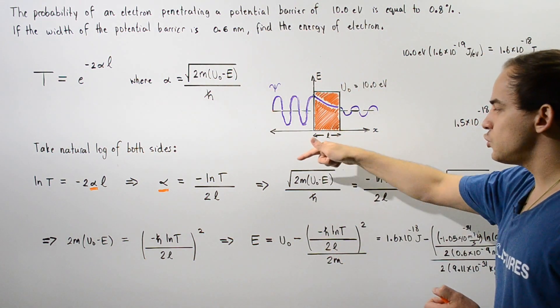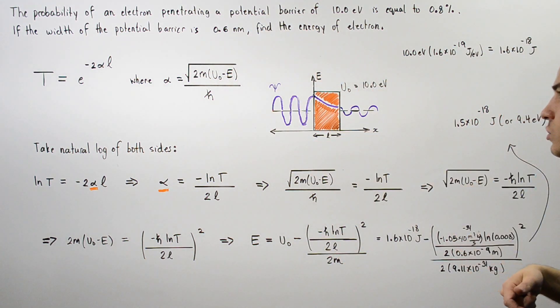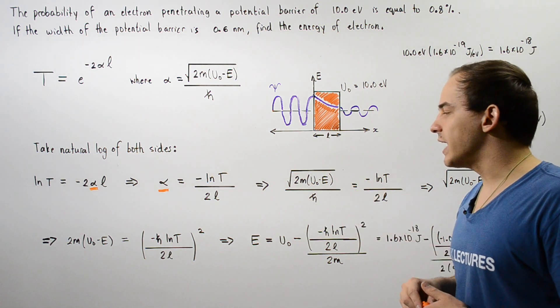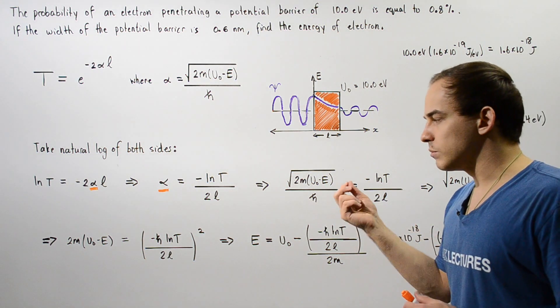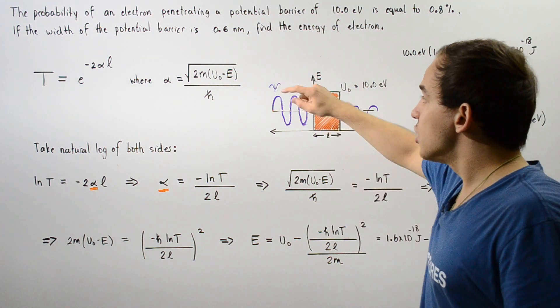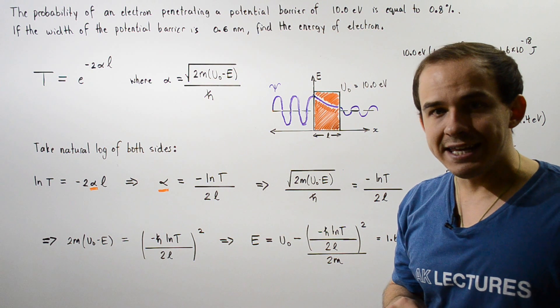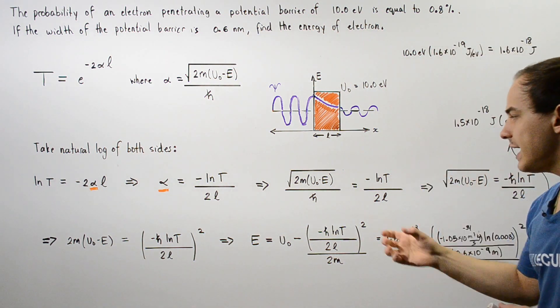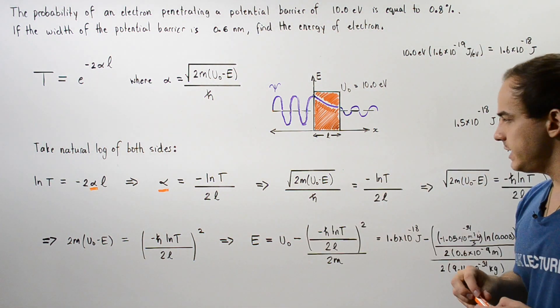The square root of 2M multiplied by U0 minus E divided by H bar. Why exactly did we replace our alpha with this ratio? Well, that's because we want to find what that E is. Our next step is to rearrange our equation and solve for E.